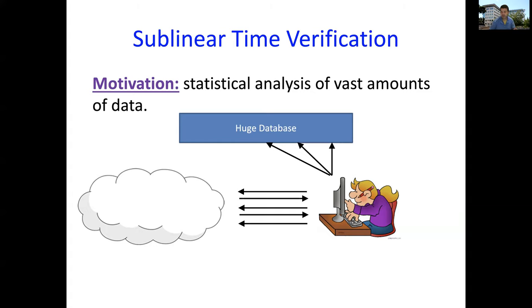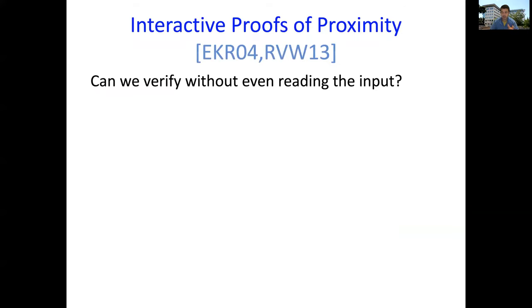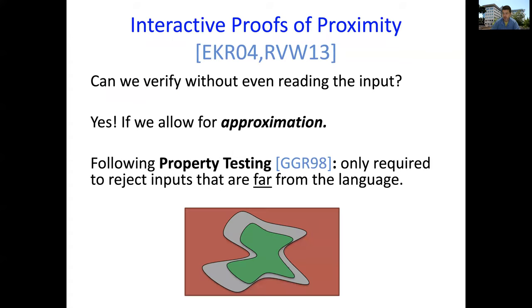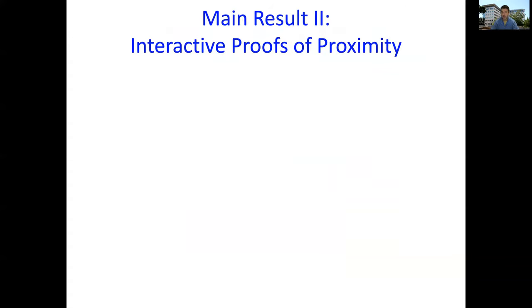Is sublinear time verification possible? It turns out that it is. You can verify things without even reading the entire input if you're willing to live with a natural notion of approximation. The notion that we're going to be considering is inspired by property testing. It basically says the following. We have this green blob, inputs that are in the language, inputs we'd like to accept. Then we have the nearby surrounding area, inputs that look close in hamming distance or relative hamming distance. This gray area, no guarantees. And then we have the red area, inputs that are far from having the property that we're interested in. Those inputs are those that we want to reject.